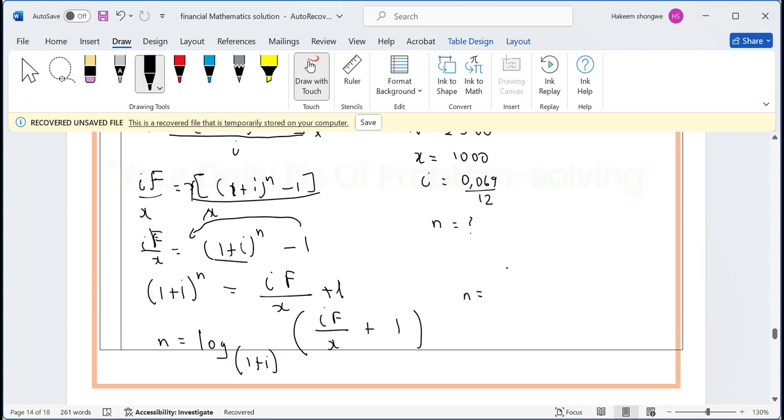Then after this, as soon as you have this, you can substitute. N is going to equal log open bracket - it's 1 plus the interest which is 0.069 divided by 12. And then we have our i, which is 0.069 divided by 12 multiplied by F. What is our F? 25,000. This is all over 1000, plus 1.